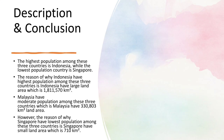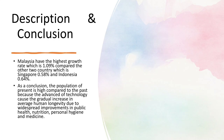The lowest population country is Singapore. Indonesia has the highest population because it has a large land area of 1,811,570 km². Malaysia has a moderate population with a land area of 330,803 km². Singapore has the lowest population because it has a small land area of only 710 km².